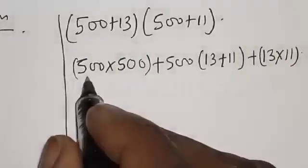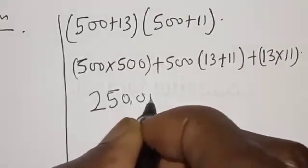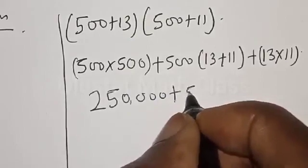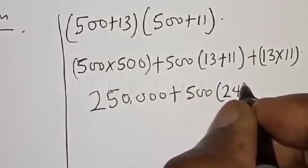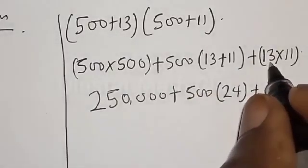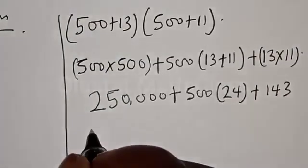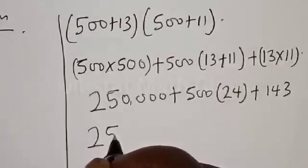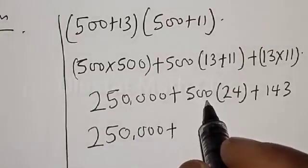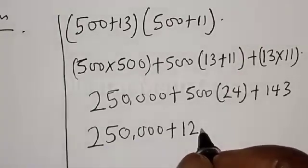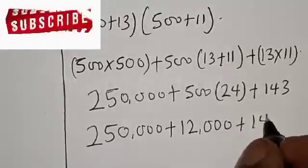Now from here, 500 multiplied by 500, that is 250,000 plus 500 into 13 plus 11, that is 24, plus 13 times 11, that is 143. Then we have 250,000 plus 500 times 24, that is 12,000 plus 143.